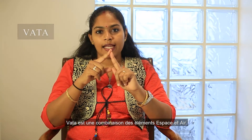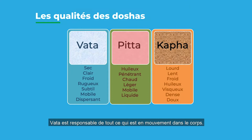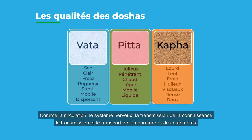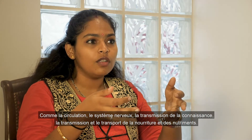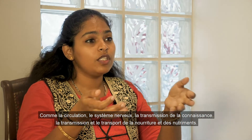Vata is a combination of space and air element. Vata by function is responsible for all that is moving in the body — everything that's moving, like your circulation, your nervous system, transmission of knowledge, transportation of food and nutrition. Everything is because of Vata.